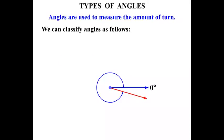And if we continue on the next turn there, we're up to what we call 360 degrees. We have turned a full circle.